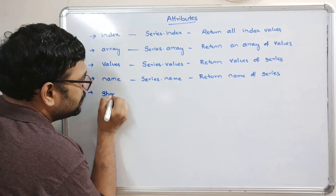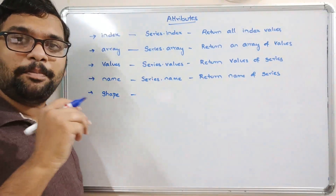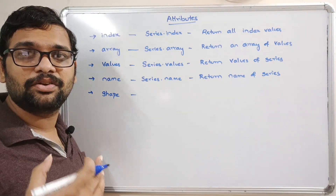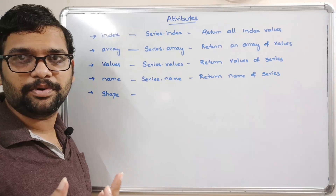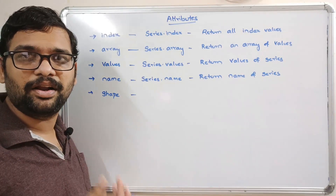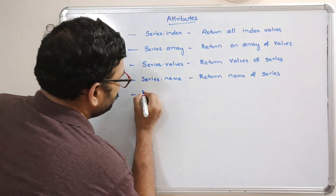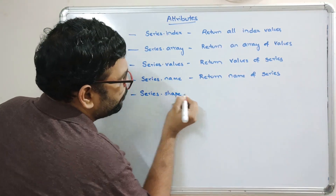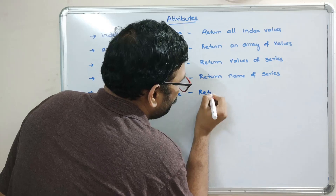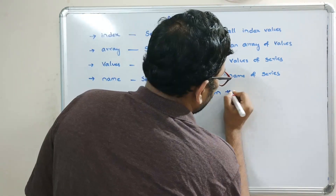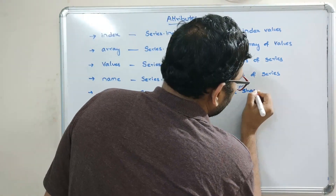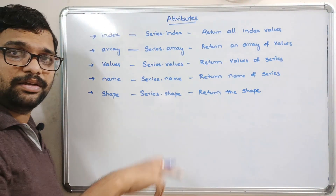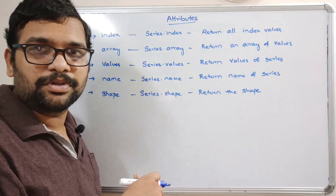The next attribute is shape. It will give the shape of the particular series — how many elements are there and what the dimensions are. The syntax is series.shape and it returns the shape of the series.